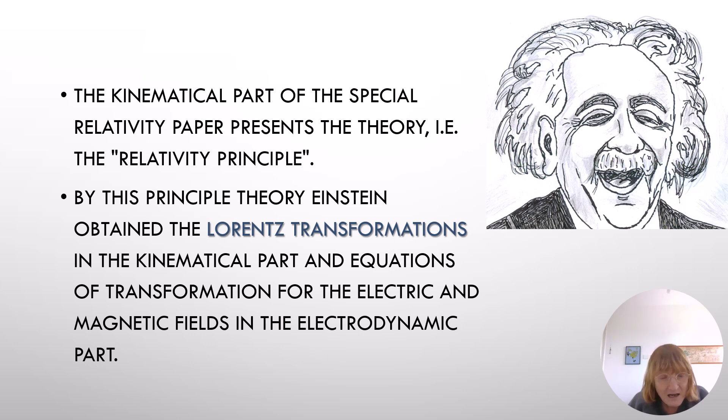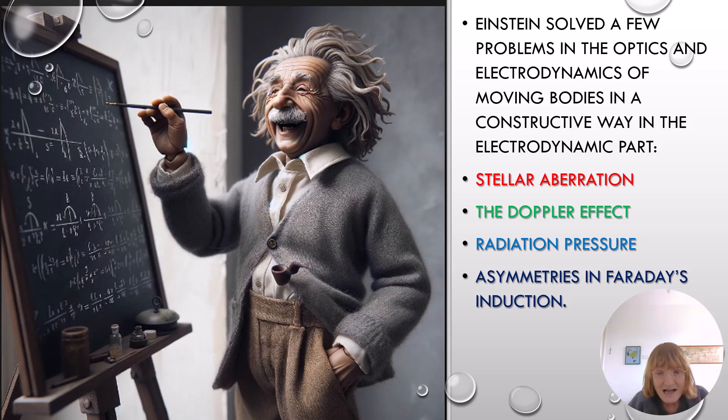The kinematical part of the special relativity paper presents the principle theory. By this principle theory, Einstein obtained the Lorentz transformations in the kinematical part and equations of transformation for the electric and magnetic fields in the electrodynamic part. Einstein solved a few problems in the optics and electrodynamics of moving bodies in a constructive way: stellar aberration, the Doppler effect, radiation pressure, and asymmetries in Faraday's induction, that is, the magnet and conductor thought experiment that opens his special relativity paper.